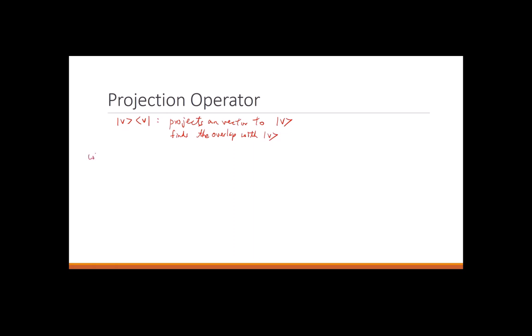Why? From completeness that we just discussed, if I have a vector V, and I want to find a component of V — a component of |v_i> in V — for example, I have a 3D vector and I want to find out how much x-hat it has. You've done that already in your homework, but many of you probably didn't use the projection operator because I had not taught you. Otherwise, it's very easy to find how much component it has.